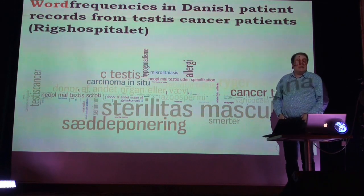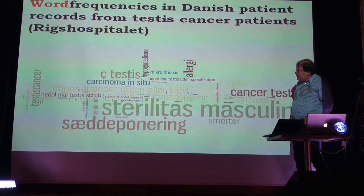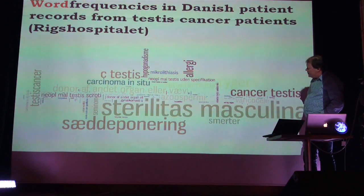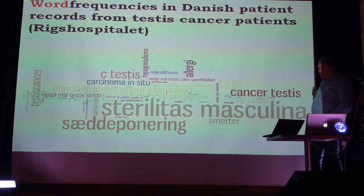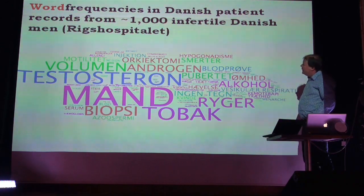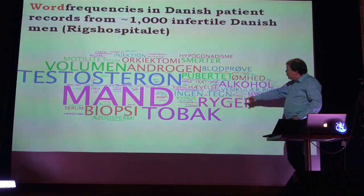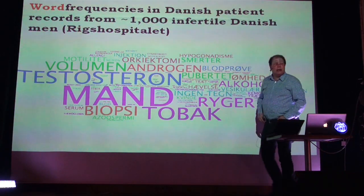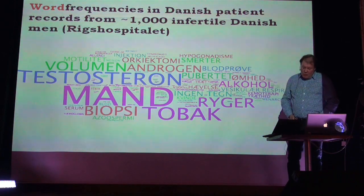We have started working on patient records. Here you see a so-called Wordle that illustrates word statistics found in texts. This is a set of patient records from Ries Hospital - testes cancer patients, with words in Danish. When I switch to another cohort - 1,000 infertile Danish men from Ries Hospital - we see words like puberty, testicle, and tobacco. When we switch disease, the word profile in the patient records also changes.